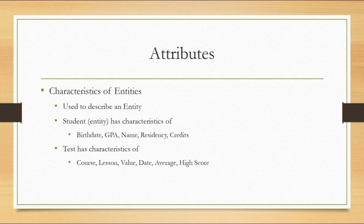For example, a student, which is an entity because it's a person, has characteristics such as the student's birth date, a student's GPA, their name, residency — whether they are a state resident or not — and how many credits they have passed. A test, like for a course, has characteristics of what course is it, what lesson is it, what's the value of the test, what date was the test given, and perhaps the average score and the high score.